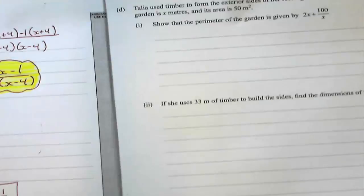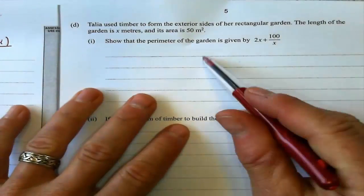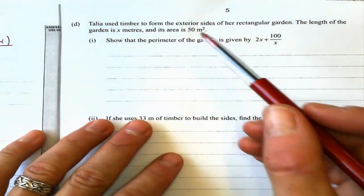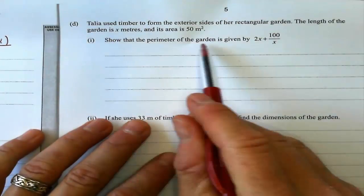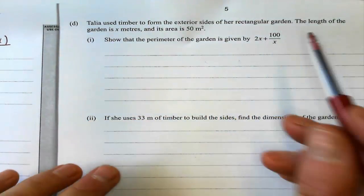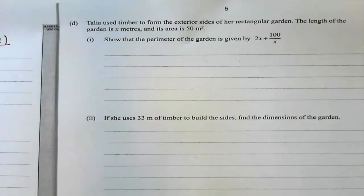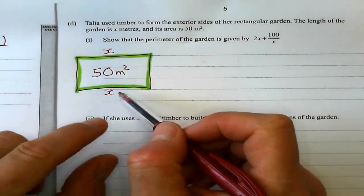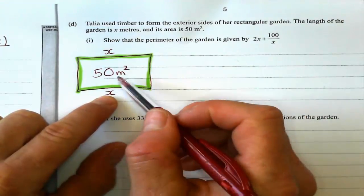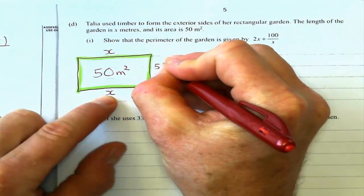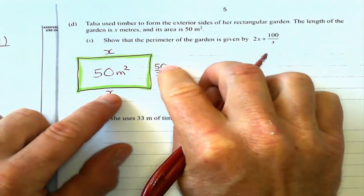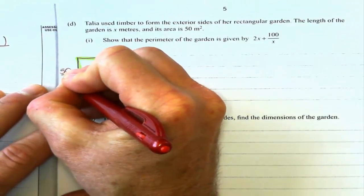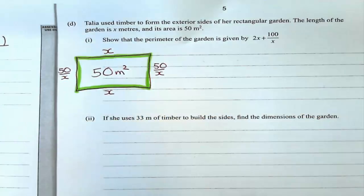Moving on. Talia used timber to form the exterior sides of a rectangular garden. The length of the garden is x meters and its area is 50 square meters. Show that the perimeter of the garden is given by this expression. Let's draw a picture here. The garden's got an area of 50 square meters. The length is x. Well, the length times the width must be 50. So that means this over here must be 50 over x because these must multiply to get the area. And that over there is 50 over x as well because opposite sides of a rectangle are equal.